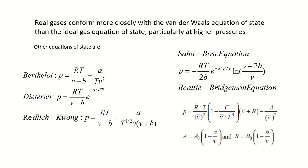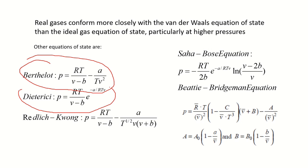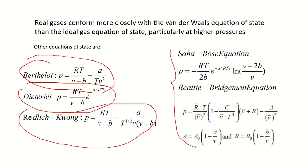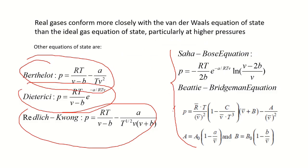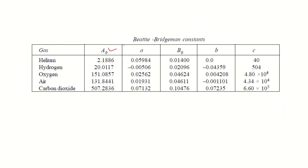Other available real gas equations include the Berthelot equation, the Dieterici equation, and the Redlich-Kwong equation. Each involves certain assumptions. For example, the Beattie-Bridgeman equation contains constants A₀, A, B₀, B, and C for various gases — helium, hydrogen, oxygen, air, and carbon dioxide. These values are available in the literature and can be substituted to find the relationships between P, V, and T.